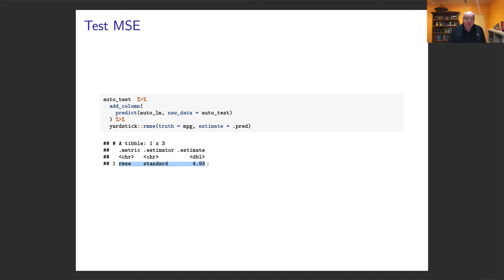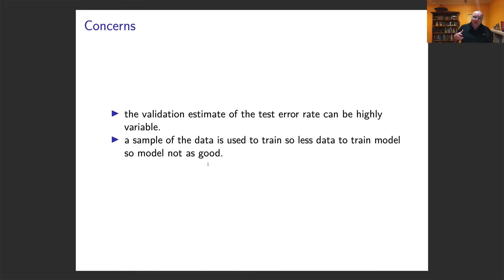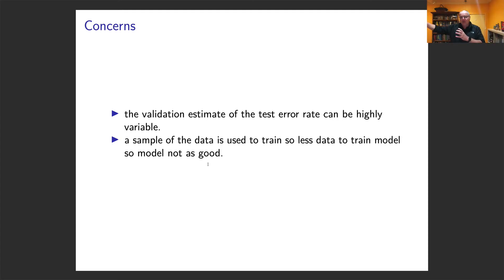The problem with the validation set approach is that this estimate of the test error rate can be highly variable depending on how the data is split. Also, you're putting some data aside and never using it for training. In practice, what we often do is split the data into training and test, put the test aside, and use cross validation on the training set for choosing hyperparameters.